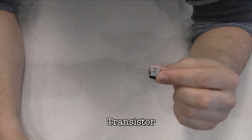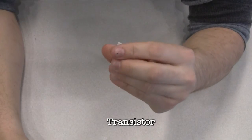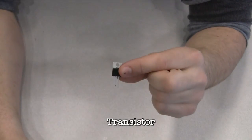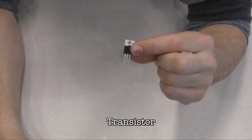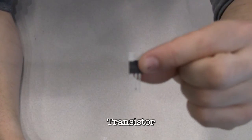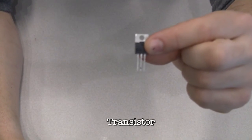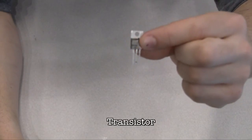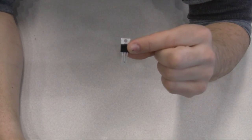A transistor is a three-legged device that can operate as an electronic switch. It's useful for controlling high-current slash high-voltage components like motors. One pin connects to the ground, another to the component being controlled, and the third connects to the Arduino. When the component receives voltage on the pin connected to the Arduino, it closes the circuit between the ground and the other component.